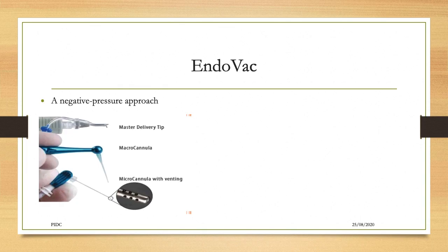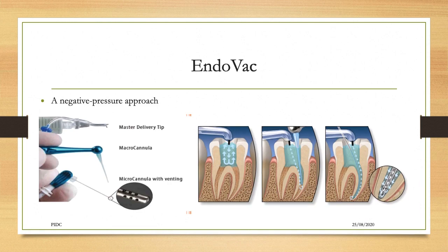The endovac system has a master delivery tip, a macro cannula, and a micro cannula. The master delivery tip continuously supplies the solution to the canal. The macro cannula removes solution and debris from the coronal surface. The micro cannula has small openings that create negative pressure to take out debris and solution from the apical part of the canal. So the master delivery tip delivers solution, the macro cannula removes from the coronal portion, and the micro cannula removes from the apical portion.